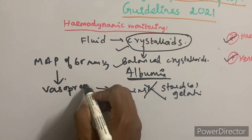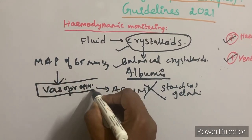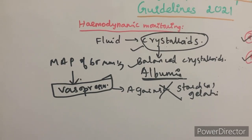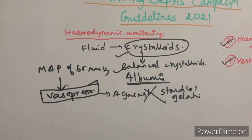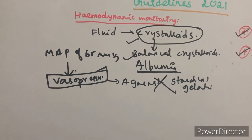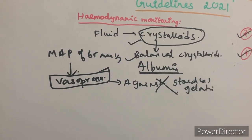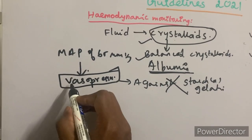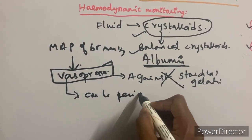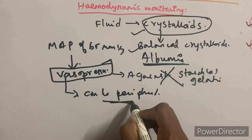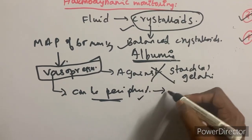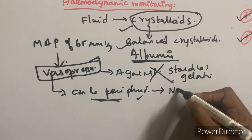Vasopressors can be started even via a peripheral line — you should not wait for a central line to be placed. Whether the patient is in the trauma bay or on the ward with a peripheral cannula, vasopressors can be initiated. The first-line vasopressor of choice is noradrenaline.